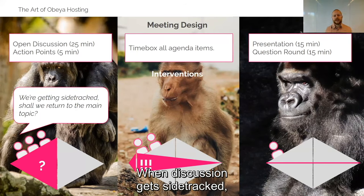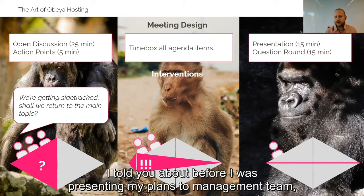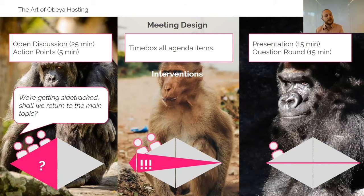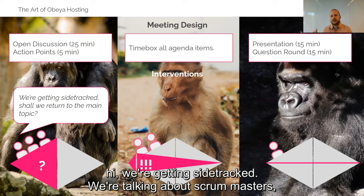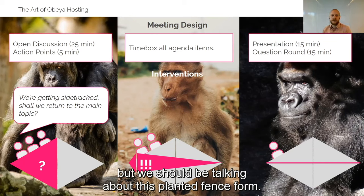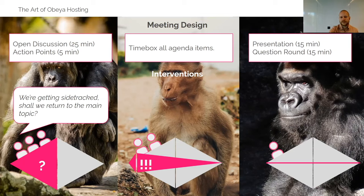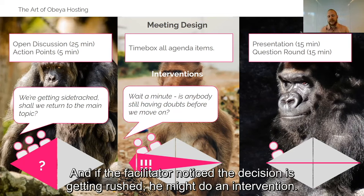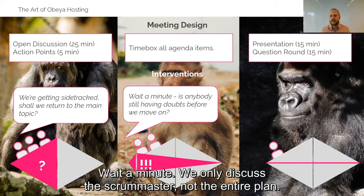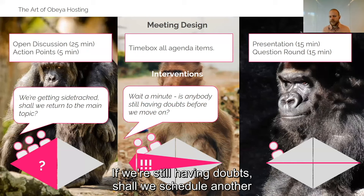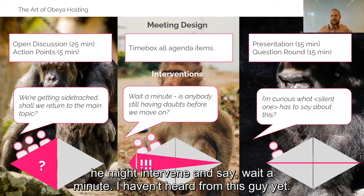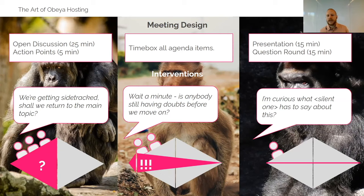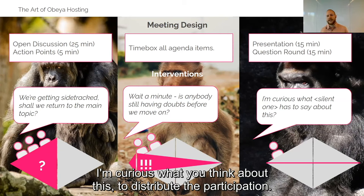A facilitator is also present during the meeting with a second technique: interventions. When discussion gets sidetracked, if there was a facilitator in that management meeting, they would say, hey, we're getting sidetracked — we're talking about Scrum Masters but we should be talking about this plan to transform. Shall we return to that? And if the facilitator notices the decision is getting rushed, they might intervene: wait a minute, we only discussed the Scrum Master, not the entire plan. If you're still having doubts, shall we schedule another meeting? And if the CEO tries to rush it through, they might say, I haven't heard from this person yet — I'm curious what you think about this.